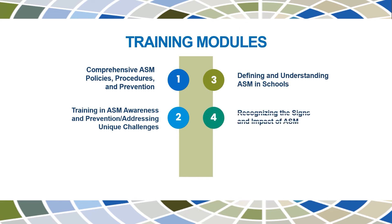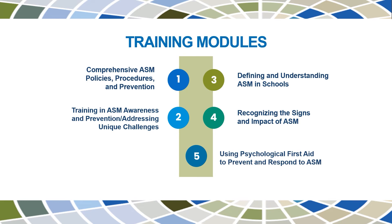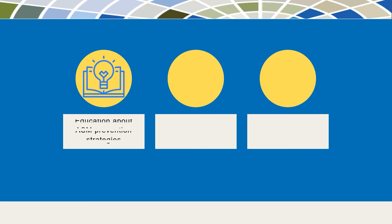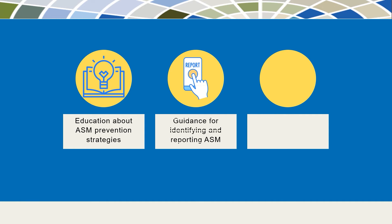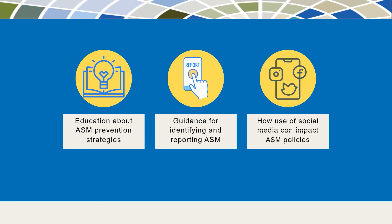You will gain knowledge of the behaviors that constitute ASM and take steps to protect students, including the ability to define, understand, and recognize the signs and impact of potential ASM, and report and investigate possible ASM incidents with partners such as law enforcement. You will also learn to meaningfully respond to incidents of ASM using psychological first aid so that your schools may provide immediate, short-term, and long-term supports to the victim as the child recovers. Additionally, you will learn about tools and resources for ASM preparedness along with specialized topics such as prevention strategies, guidance for identifying and reporting ASM, and the use of social media and technology in ASM.